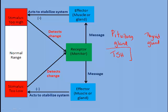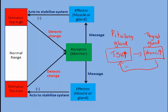The pituitary gland secretes a hormone called thyroid-stimulating hormone (TSH), dumps it into the bloodstream. When thyroid-stimulating hormone levels go up, the effect on the thyroid gland is to get it to release some thyroxin. And so when thyroxin levels increase in our blood, they increase to a point and then they reach a threshold. When they reach a particular threshold, negative feedback occurs and the pituitary gland drops the amount of TSH. And when it does that, the thyroid gland takes note of the reduced TSH and gets a signal to release less thyroxin — so thyroxin levels drop off.